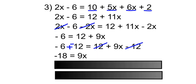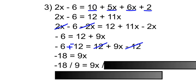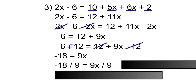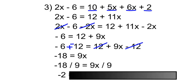To remove the 9 times x, we divide both sides by 9. Negative 18 divided by 9 is equal to 9x divided by 9. Negative 18 divided by 9 is negative 2. And the 9s will cancel on the right-hand side, leaving us with x equals negative 2.